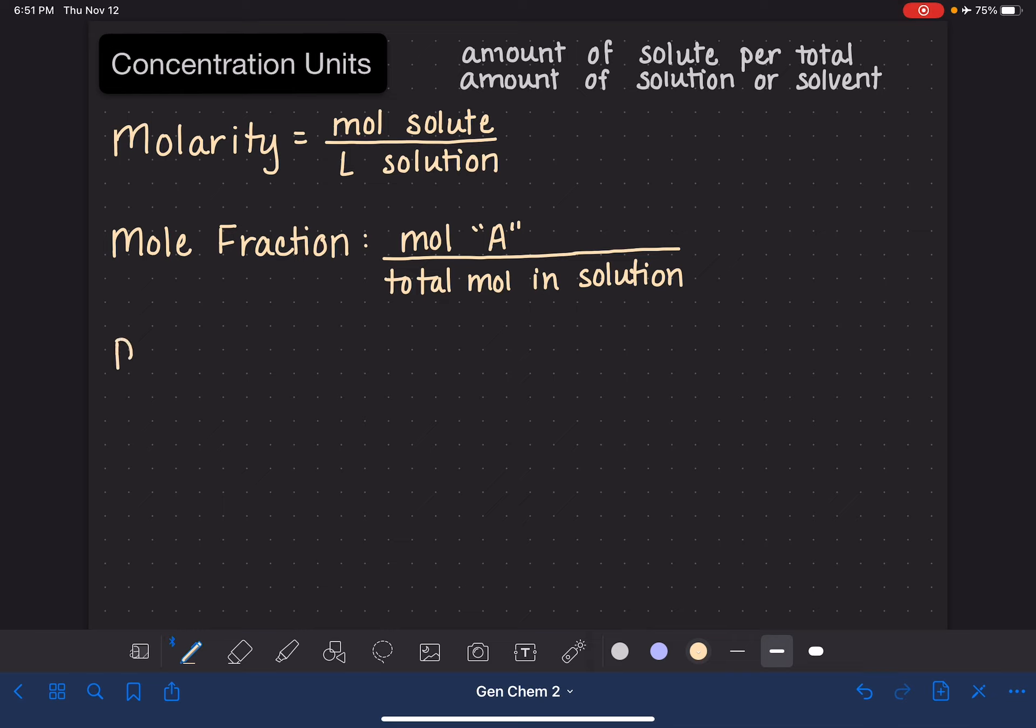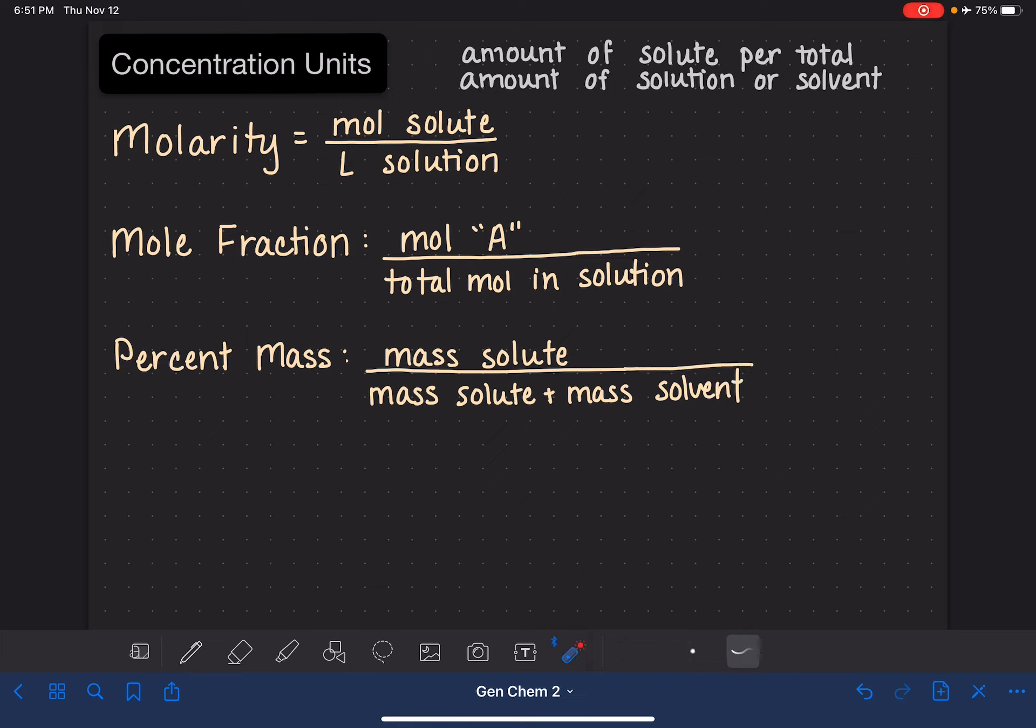We also occasionally use a unit called percent mass. The percent mass unit is calculated by taking the mass of the solute—typically in grams—and dividing that by the total mass of the whole entire solution. This term in the denominator can sometimes be confusing to students, so I'm going to write this as the mass of the solute plus the mass of the solvent, just to make sure everybody understands that we're taking the total mass of the solution.